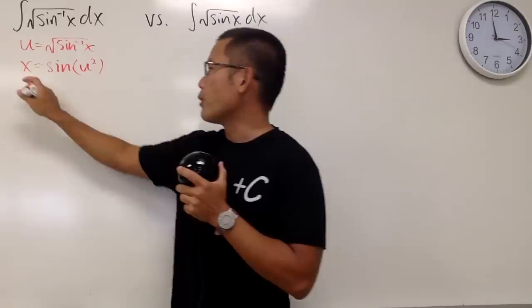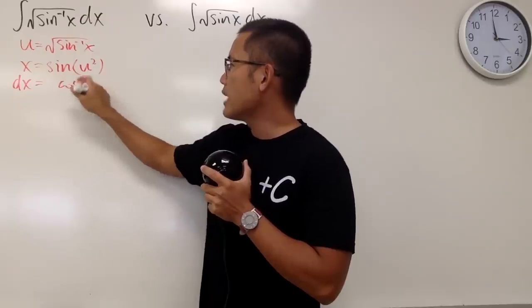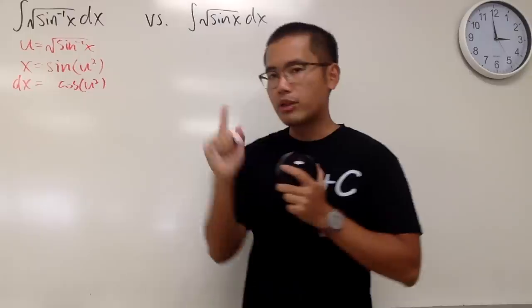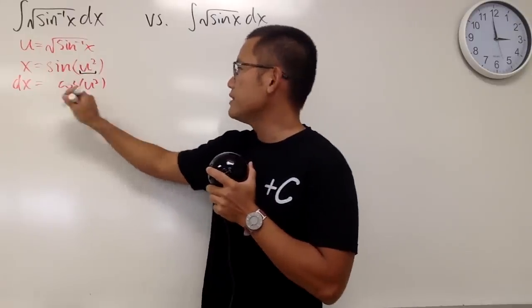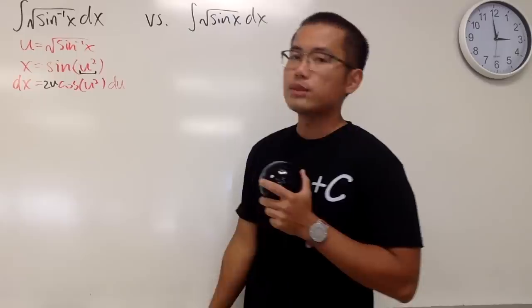And then of course we differentiate both sides. We can get dx equals the derivative - sine is cosine, the input stays the same, but don't forget the chain rule, multiply by the derivative of the inside, so we get 2u right here, and of course we have the du as well.